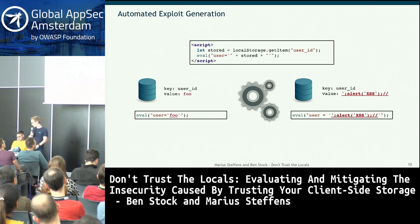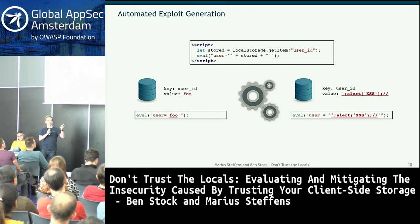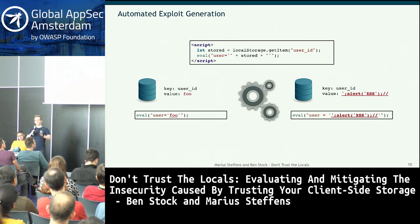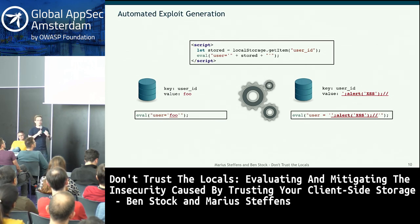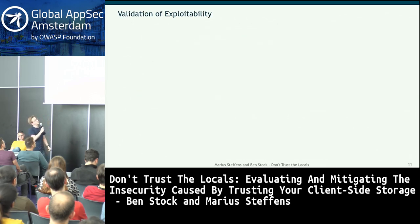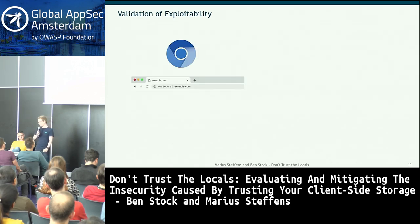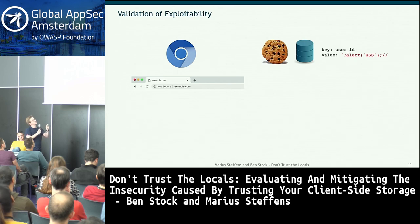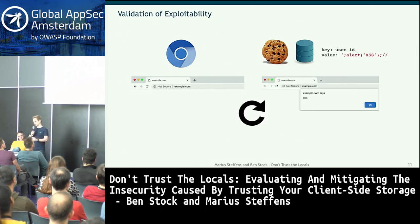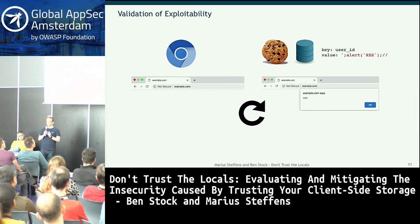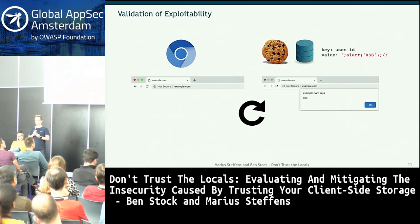We also released the tainted Chromium engine — more on that on the last slide. Having an exploit candidate doesn't yet confirm a vulnerability, because changing a storage value can break the data flow if the app validates the value's structure. So we validate candidates in real browsers: let the app fill its storages, substitute our candidate, reload the page, and check if the payload executes.